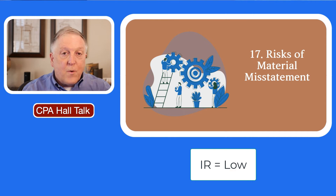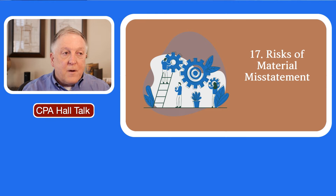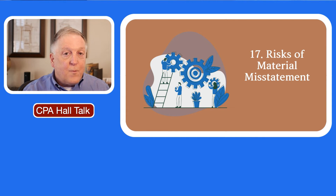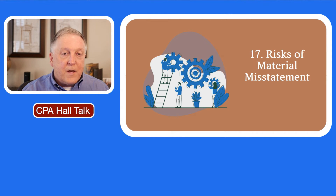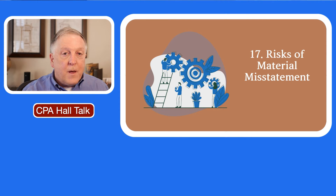It definitely wouldn't be any more than moderate. So let's say it's low — you've got a low inherent risk for valuation, high control risk. What is the RMM — low, moderate, or high? Oftentimes I will use the lower of the two elements, so you'd have low inherent risk, high control risk, and a low RMM. But that depends on how much risk you actually have.